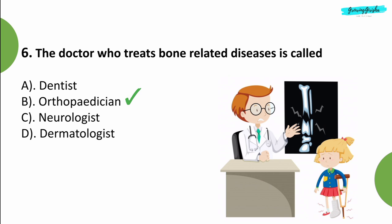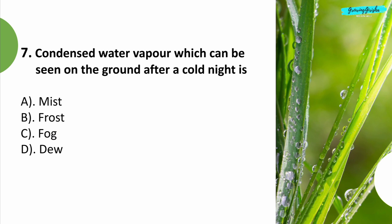Question 7: Condensed water vapor which can be seen on the ground after a cold night is? Option D: Dew.